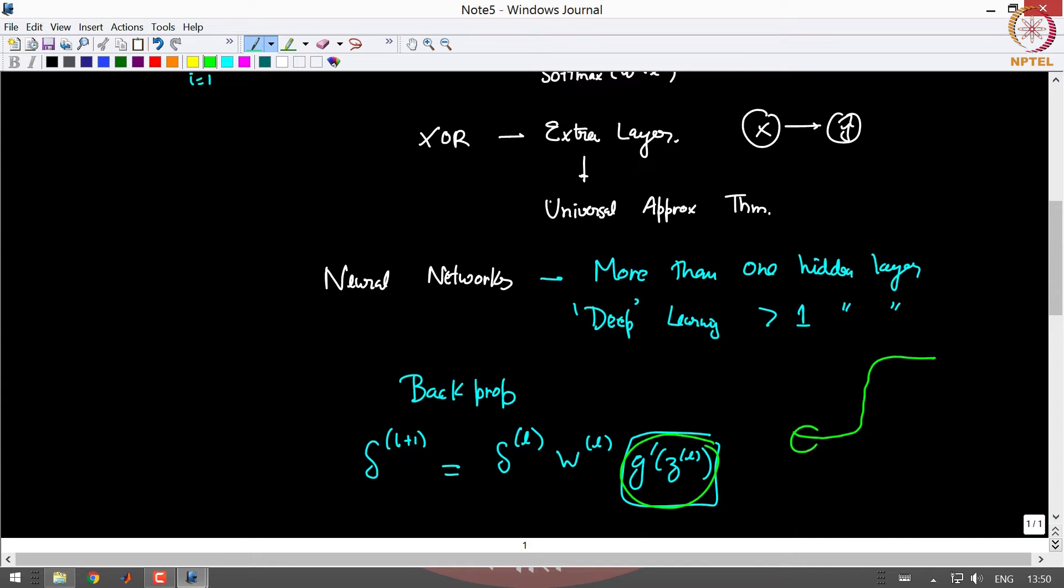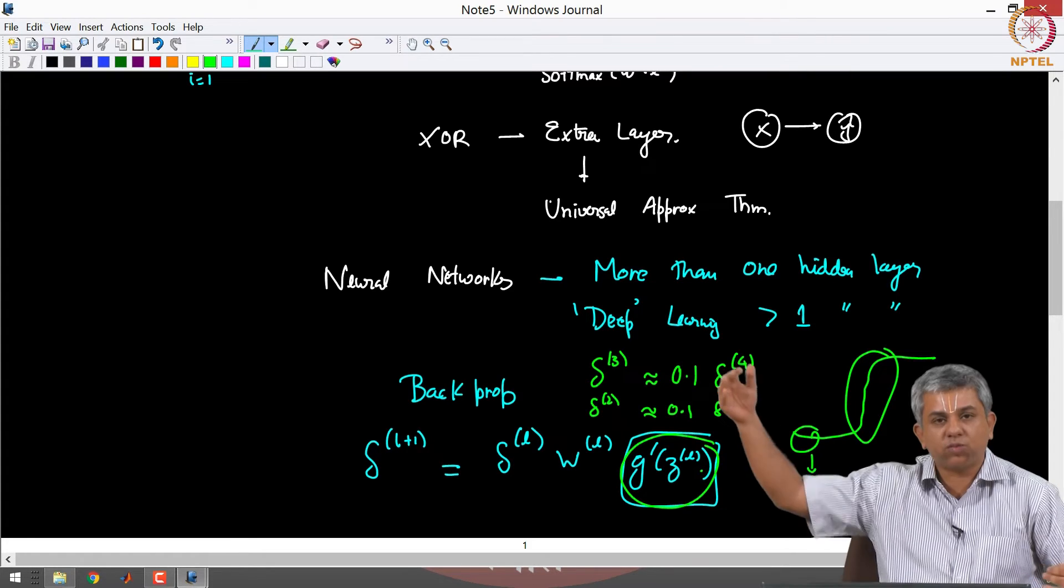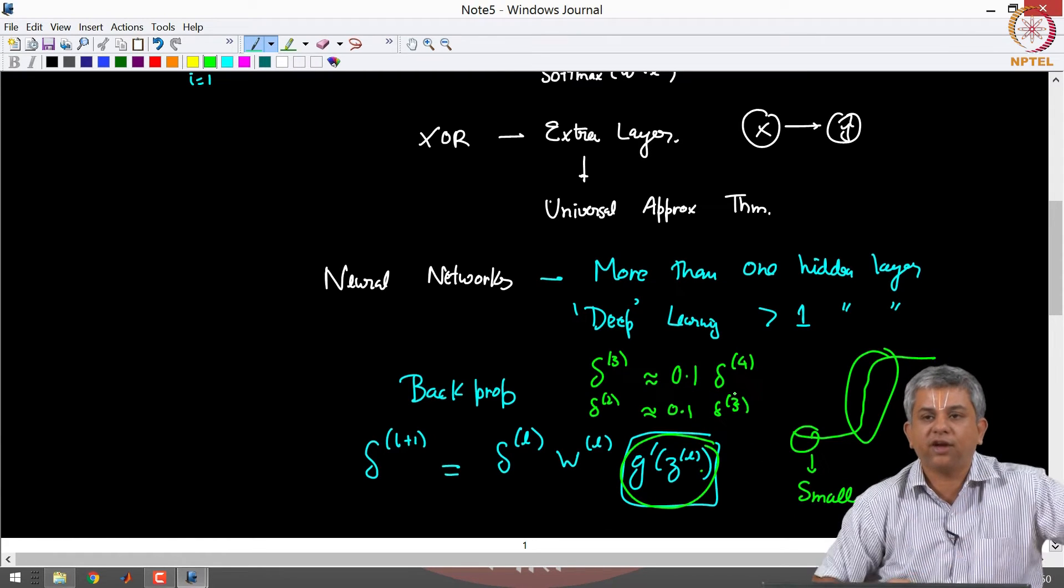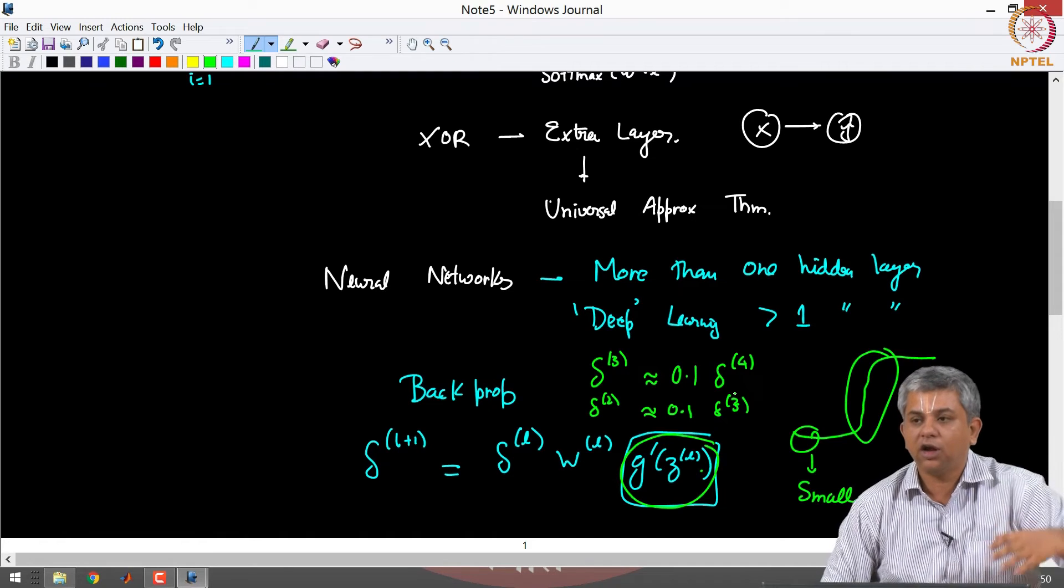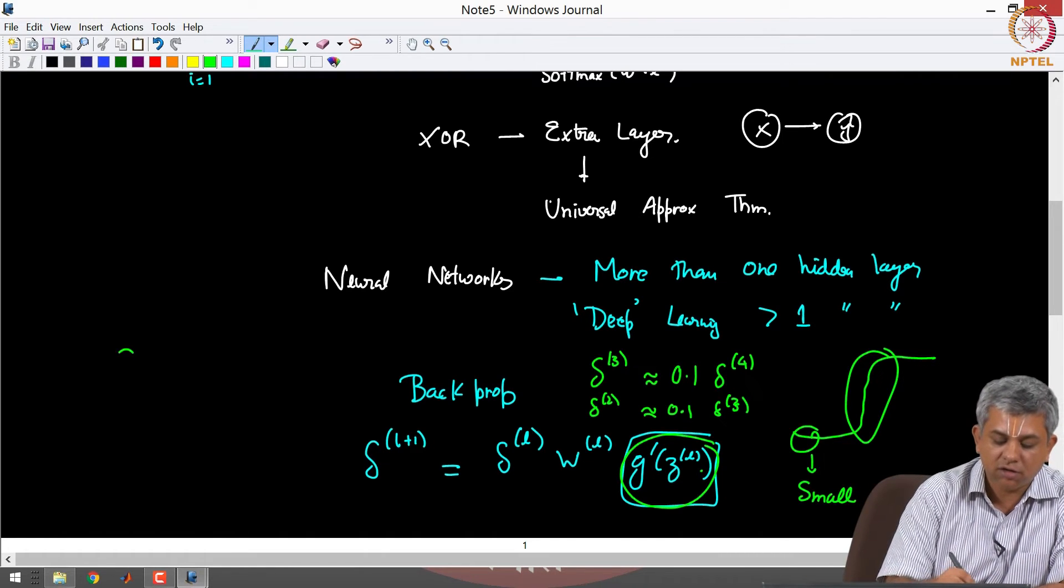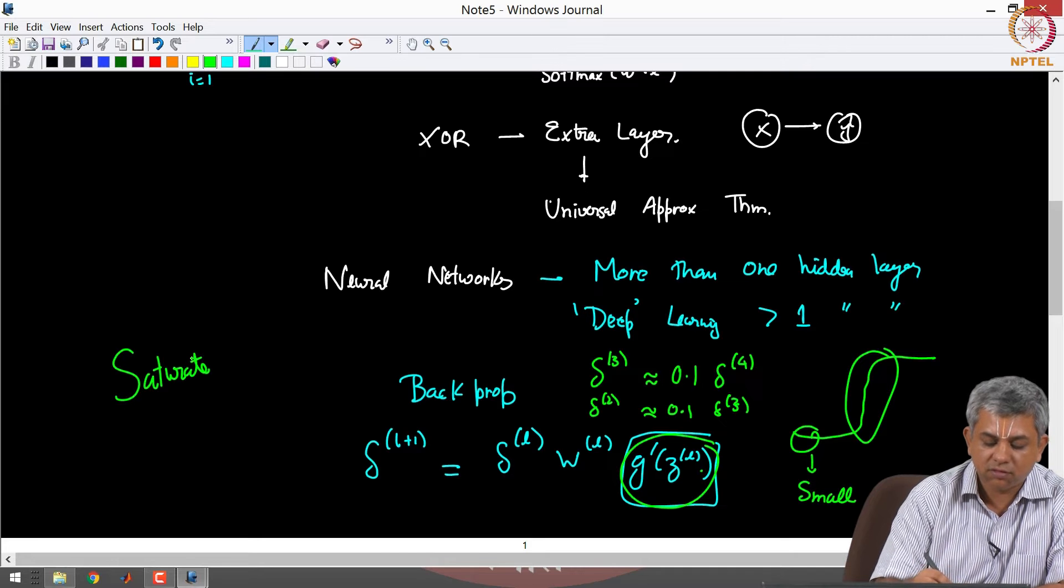The further away you are from this central portion which has high slope, the further away you get this can get very small and it can keep on multiplying. So you have delta 3 is some small number let's say 0.1 multiplying delta 4, delta 2 will be that small number multiplying delta 3 so on and so forth. If the small numbers keep on multiplying it can actually get very small and it can go below a machine epsilon and the network will not train.